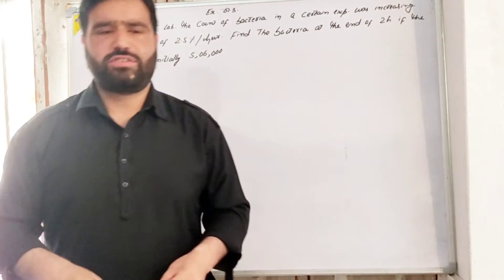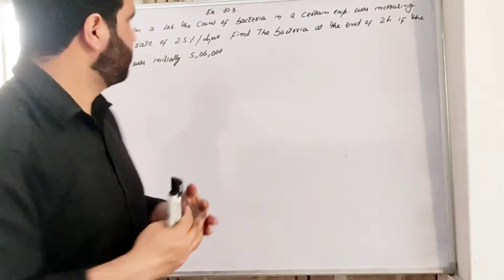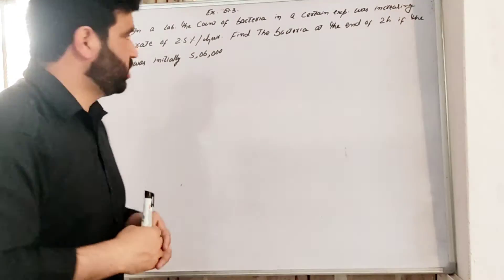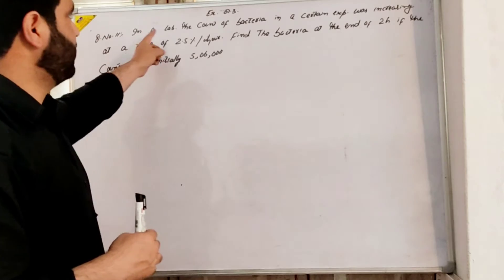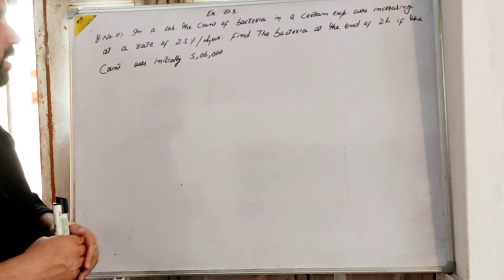Assalamu alaykum students, this is class 802, class 836. Last exercise, question number 11. In a laboratory, the count of bacteria in a certain experiment was increasing at a rate of 2.5 percent per hour. Find the bacteria at the end of 2 hours.